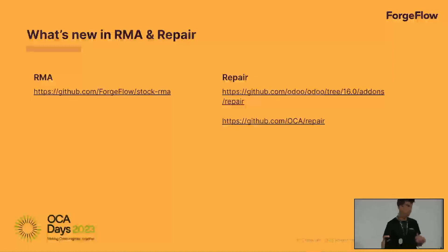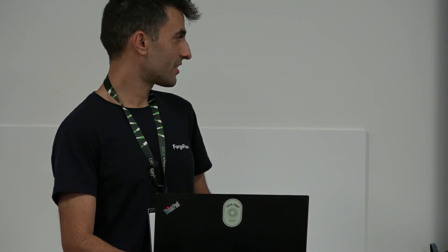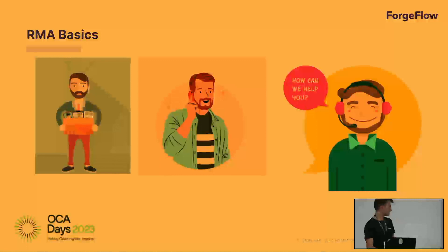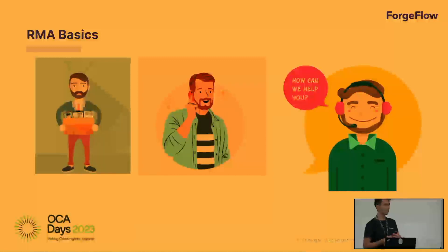We at Force Flow have contributed a lot on the migration of the modules and the new features. So what is an RMA? Basically the customer receives a product, there is a complaint, and the customer wants to return the product. There is a customer service process and at the end the company authorizes the customer to return the product — that is a formal authorization.